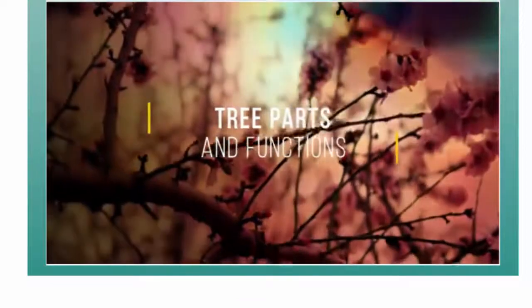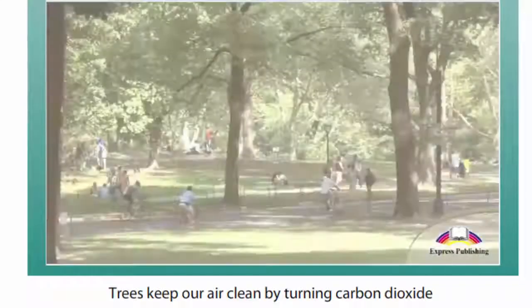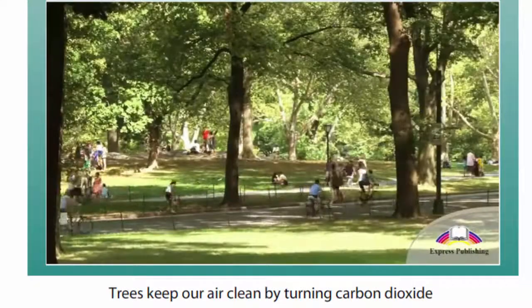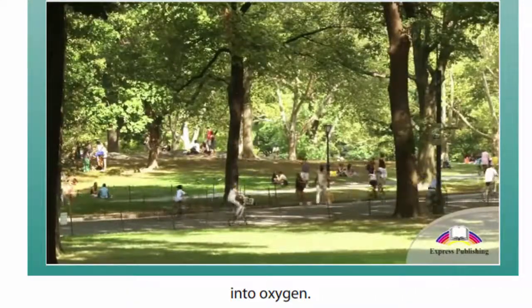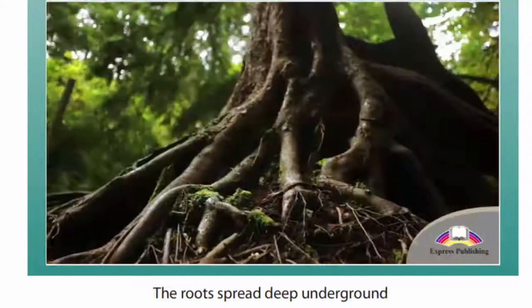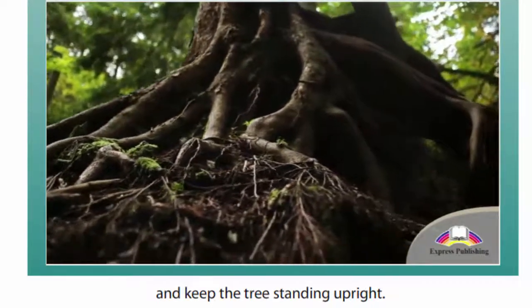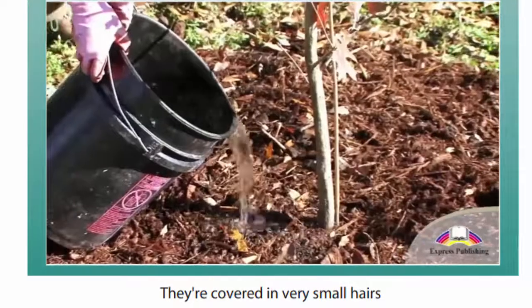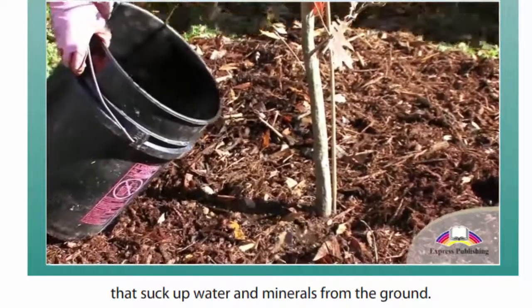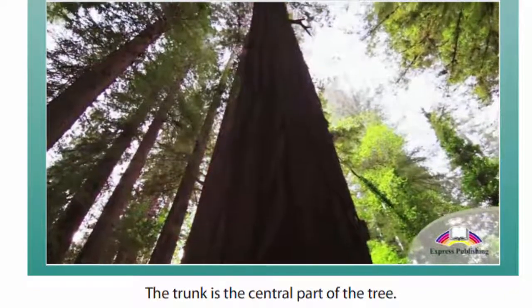Now let's watch the video. Tree parts and functions. Trees keep our air clean by turning carbon dioxide into oxygen. Every part of a tree plays a specific role. The roots spread deep underground and keep the trees standing upright. They're covered in very small hairs that suck up water and minerals from the ground. The trunk is the central part of the tree.